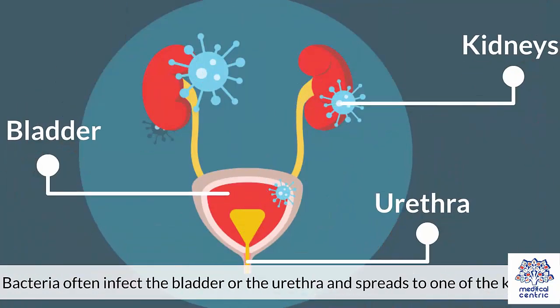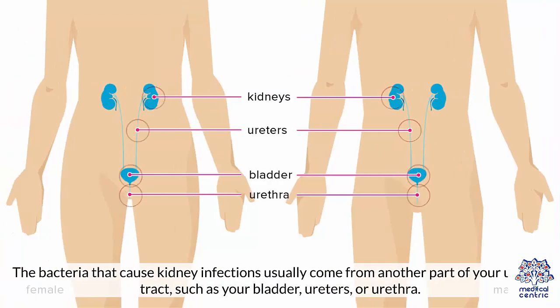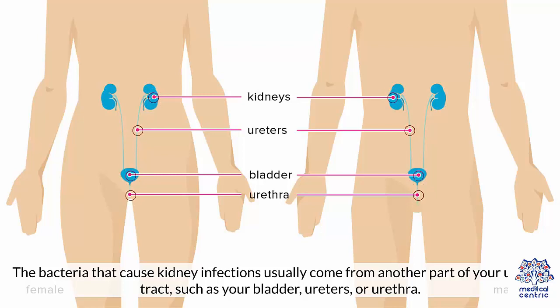Bacteria often infect the bladder or the urethra and spread to one of the kidneys. The bacteria that cause kidney infections usually come from another part of your urinary tract, such as your bladder, ureters, or urethra.